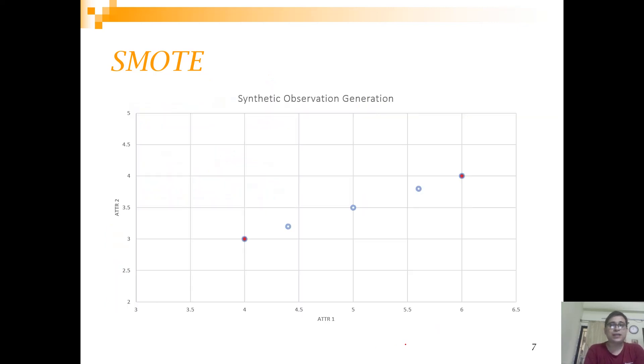If I just plot it, you see these are my original minority observations, and these are my synthetic observations. But you can understand that if you draw a line between this, all of this will fall on that line. So this is how SMOTE generates synthetic observations. Quite a simple algorithm.